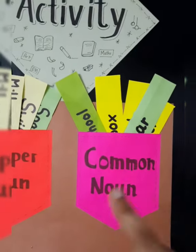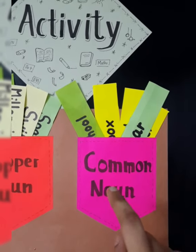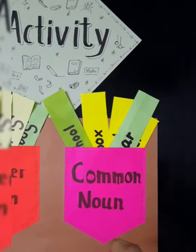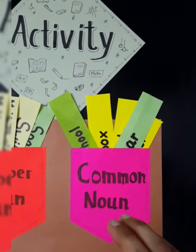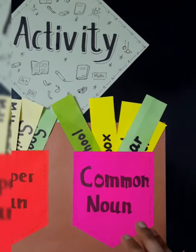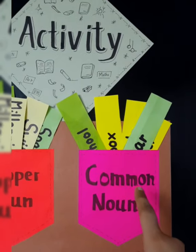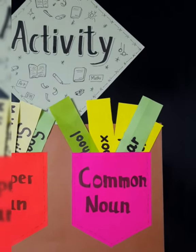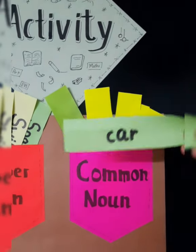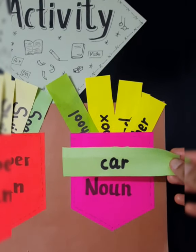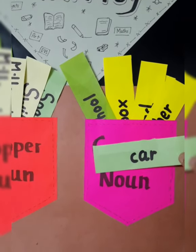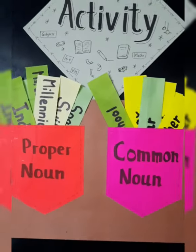Now, common noun — general names of persons, places, animals, or things are called common nouns. General name or undetailed name — kisi bhi person, places, animals or things ke naam ko hama common noun. Common noun always starts with a small letter, like 'car' — as you can see, C is small. So common noun always starts with the small letter.